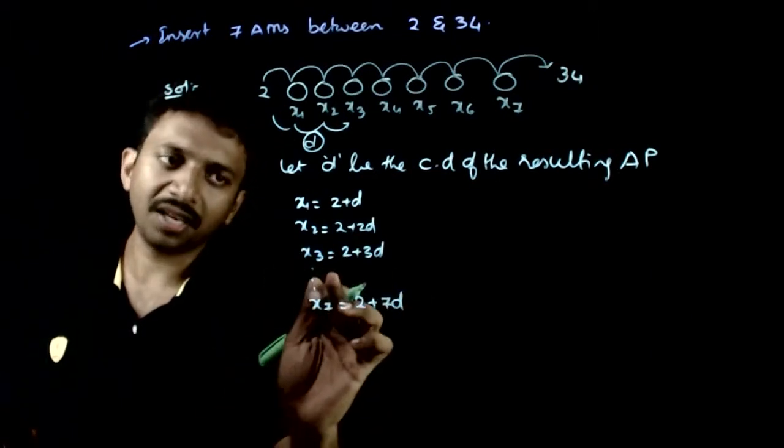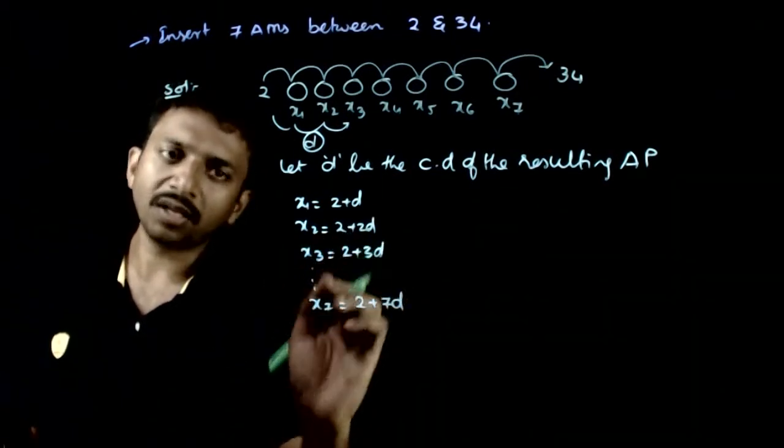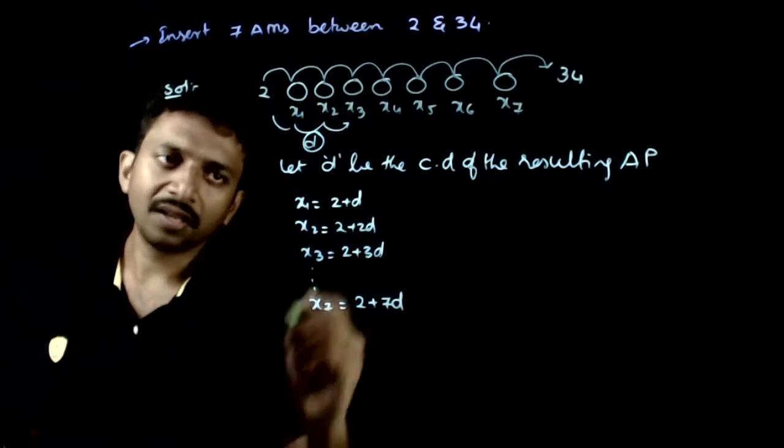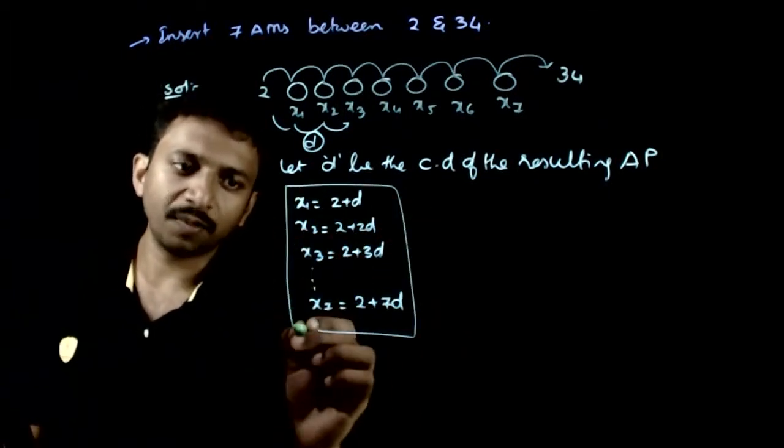Continuing this pattern, x7 would be 2 plus 7D. So these are the seven arithmetic means.